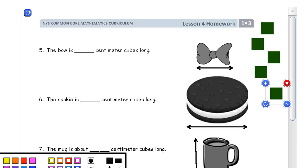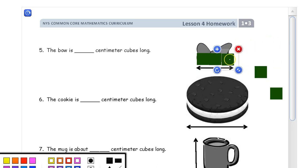And here's our second page. And we've got a bow to measure. So we've got some more cubes here. One, two, three. We're counting centimeters, and that's three centimeters.